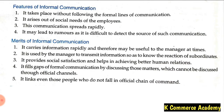The second feature is it arises out of social needs of the people — if someone's mood is bad, a friend comes and talks to them, fulfilling social and psychological needs. That is why informal communication happens, not for organizational goals. The third feature is this communication spreads rapidly — since no prescribed scalar chain needs to be followed, information spreads immediately from A to B to C and so on very fast. Fourth feature: it may lead to rumors, as it is difficult to detect the source of such communication.